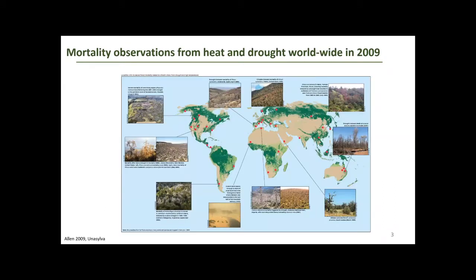Everything started basically in 2009 when Craig Allen published this particular map showing instances or occurrences of increased tree mortality, but also forest die-off that could be linked to drought spells and elevated temperatures.